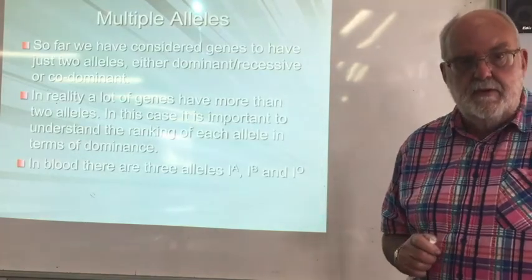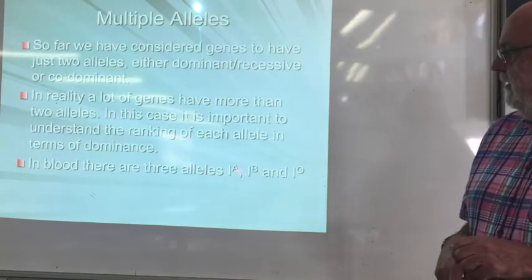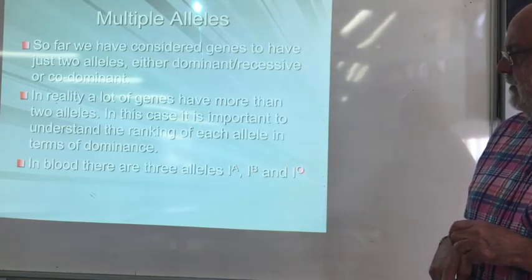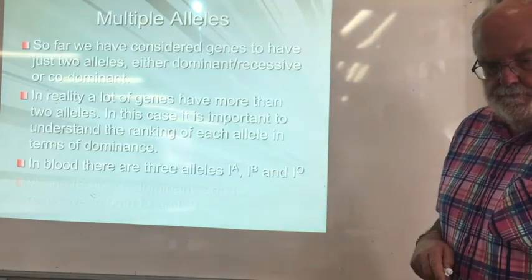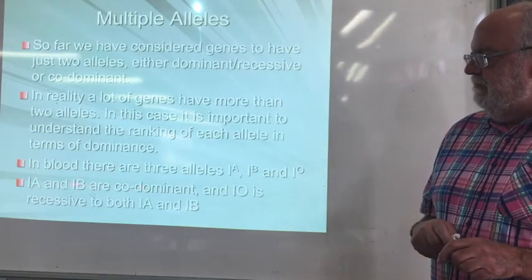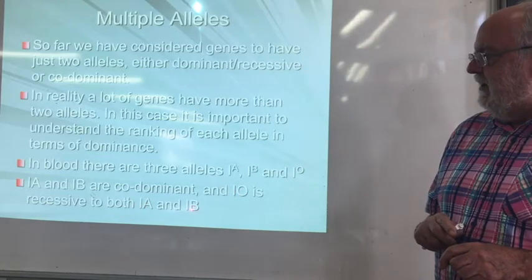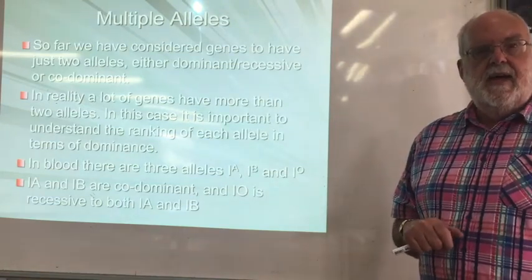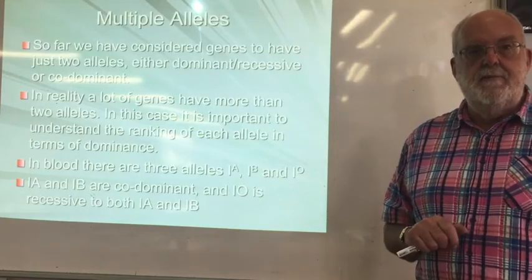The most common example is blood groups. There are three different alleles for blood, and we use the same idea — find the letter I, and then A, B, and O are the three different alleles that can be expressed by that particular gene. In the case of blood, I superscript A and I superscript B are codominant — they are equally dominant to each other — and I superscript O is recessive to both I superscript A and I superscript B. Whenever you're doing a question related to multiple alleles, that's the first thing you need to sort out: which ones are dominant to others, is there any codominance, and which is the one that's recessive to everything?